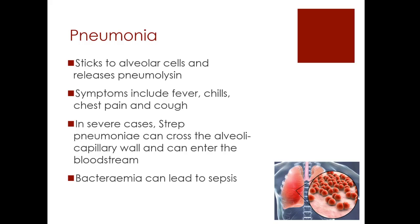The most common infection it causes is community-acquired pneumonia. It sticks to alveolar cells and releases pneumolysin, which leads to destruction of the pneumocytes and alveolar capillaries. Symptoms of pneumonia include fever, chills, chest pain, and a cough. In severe cases, Streptococcus pneumoniae can cross the alveolar capillary wall and enter the bloodstream — bacteremia. Bacteremia can lead to sepsis, causing hypoperfusion of the vital organs. If the vital organs are not receiving sufficient blood, this is the body's immune response to the bacteremia, which is sepsis — and of course this is life-threatening.